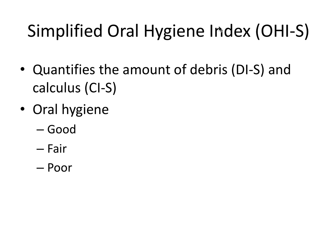Lastly, we have the Simplified Oral Hygiene Index. This one measures the amount of gross debris, which is the DI component, and the amount of calculus, which is the CI component. DI and CI added together results in the OHI-S score. This measure assesses whether the patient has good, fair, or poor oral hygiene. And of course, this one could be easily reversed if a patient improves their oral hygiene.